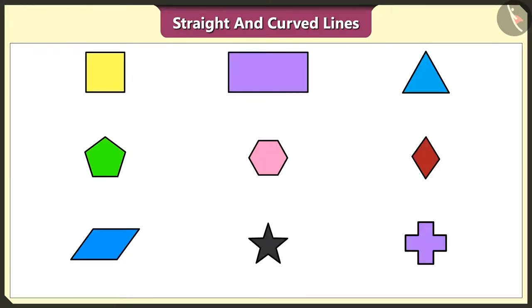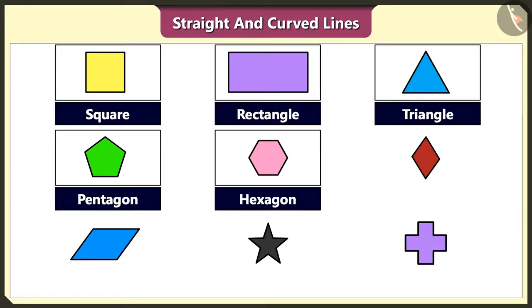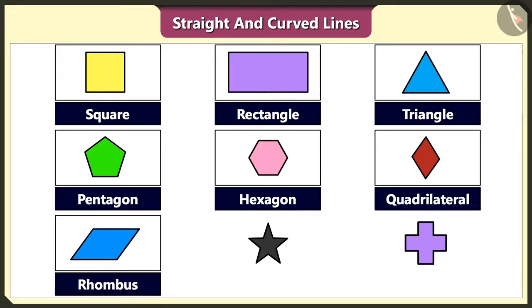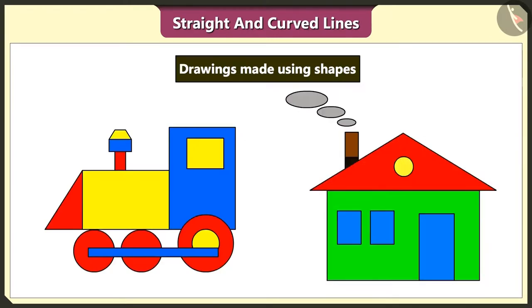And we can make square, rectangle, triangle, pentagon, hexagon, quadrilateral, rhombus, star, and plus using straight lines. We can make several drawings easily using these shapes.